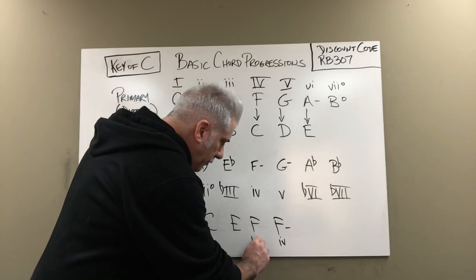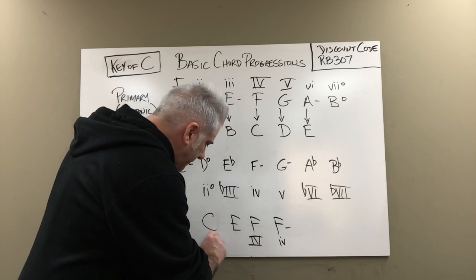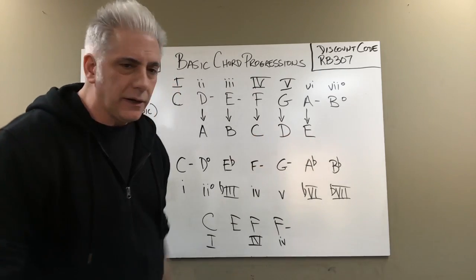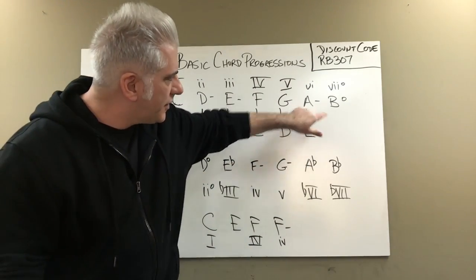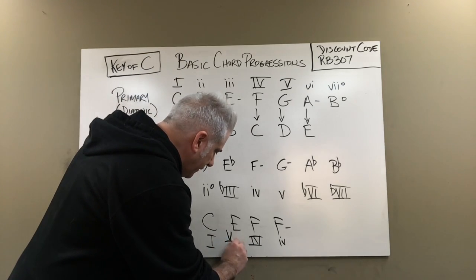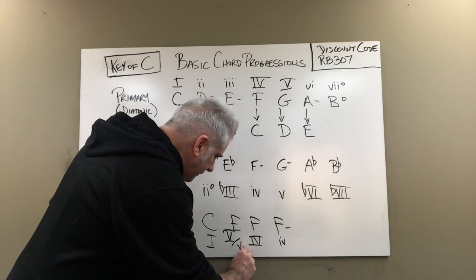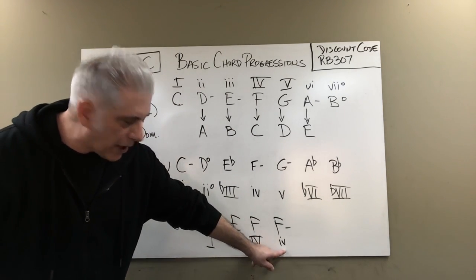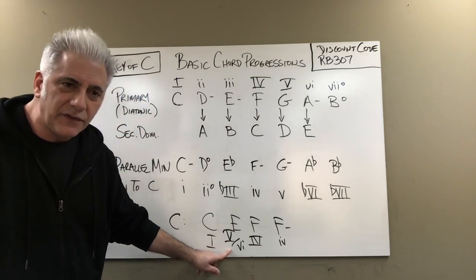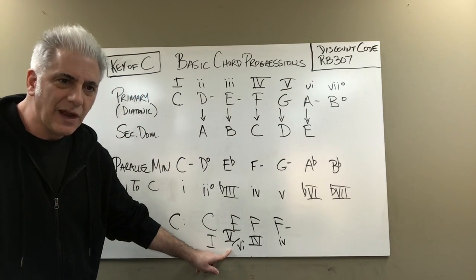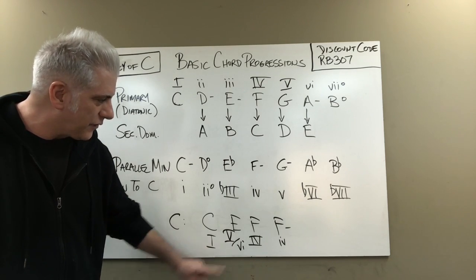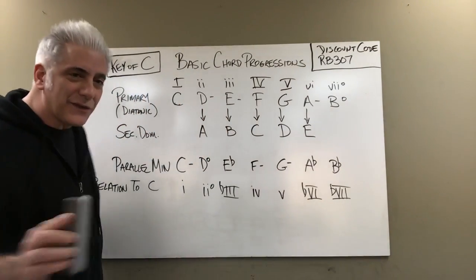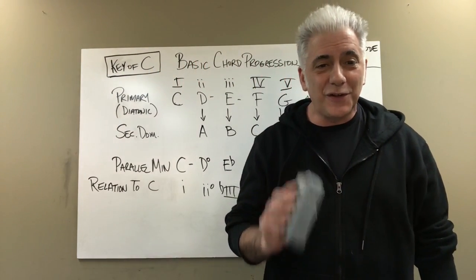This is how chord progressions are made up — this is how they're analyzed and how people come up with them. This is why the title says every musician needs to know these chord progressions. If you just know what chords are in a major key, what the five secondary dominants are, and then go to the parallel minor and know those chords — you have a massive palette to work from.